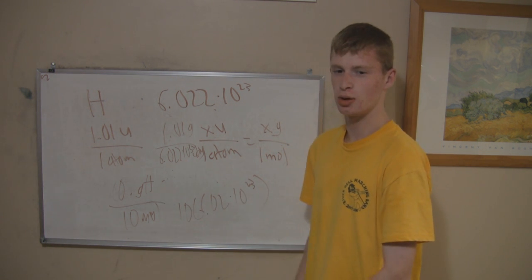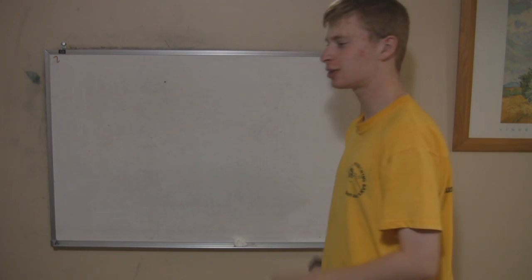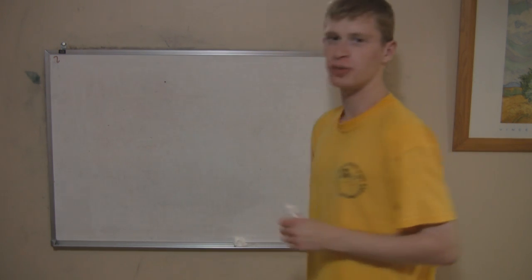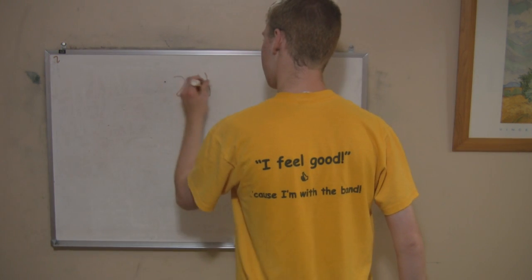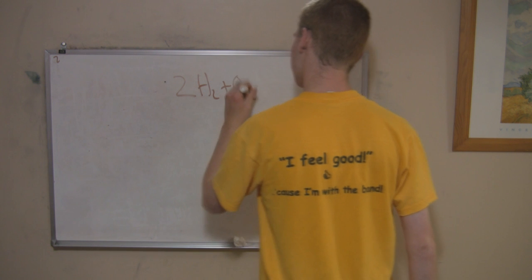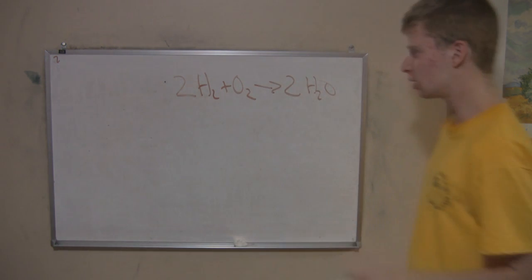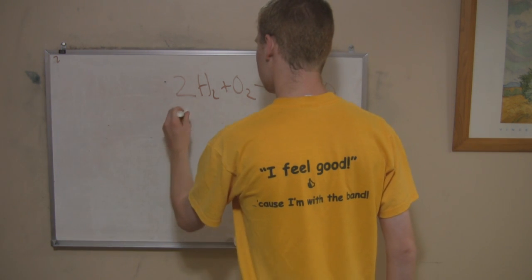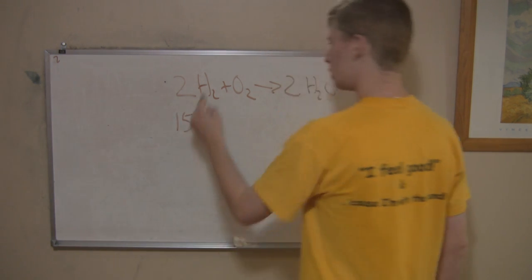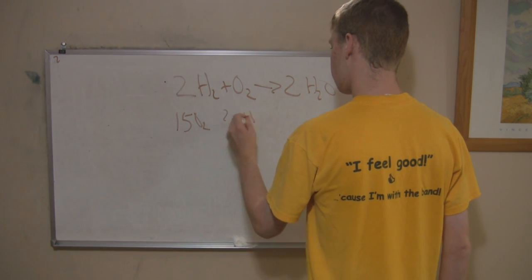Now, let's go on to the next section. So now that you know how to convert from grams to moles, let's look at a practical application. One of the ways to make water is to mix hydrogen with oxygen. So that's the equation. Let's say you have 15 grams of oxygen and an unlimited amount of hydrogen. How many grams of water are you going to get?